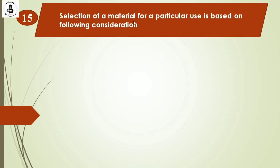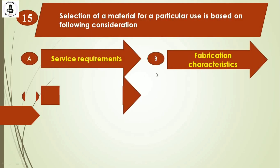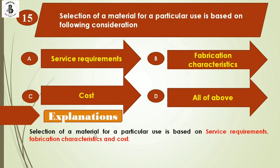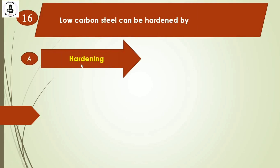Question 15: Selection of material for a particular use is based on which consideration? Option A: service requirements, Option B: fabrication characteristics, Option C: cost, Option D: all of the above. Material selection depends on service requirements, fabrication characteristics, and cost — all three factors. The right answer is Option D, all of the above.